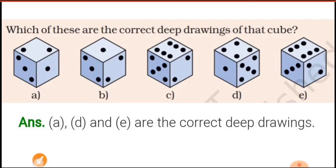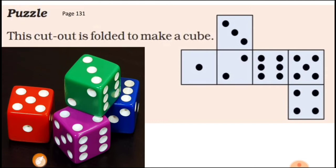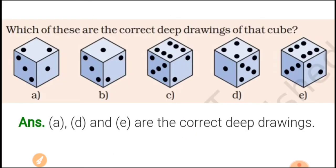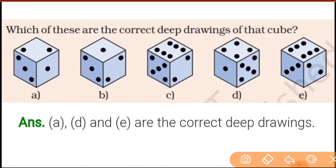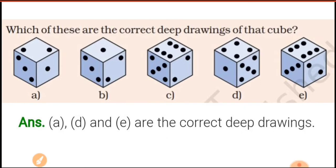Number E: top pe six karna hai, left mein three hona chahiye, right mein two hona chahiye. Agar top pe six karo toh left mein three aur two aajayega. Finally your answer is: A, D, and E are the correct deep drawings — because of the position of numbers on the faces.